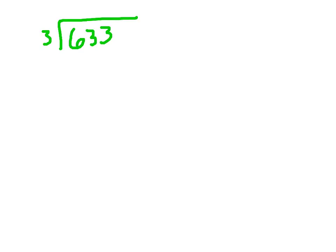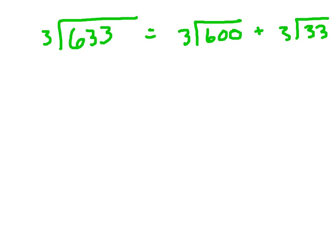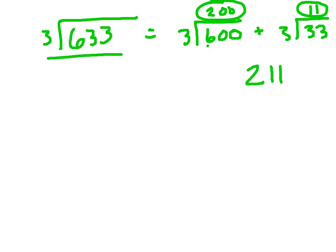Alright, let's take a look at this. 633 — let's say that equals 3 goes into 600, that's easy, plus 3 going into 33. I bet you can handle that. That would be 11, right? And then 3 goes into 600 how many times? Well, 3 goes into that 6 two times, plus the two zeros — so 200. Then take 200 plus the 11: that would be 211 times.